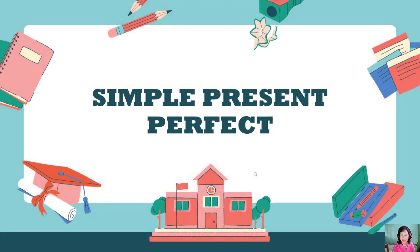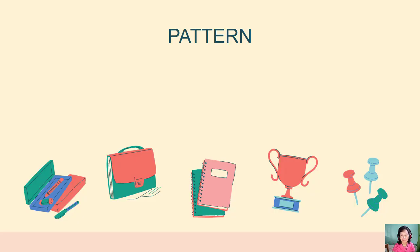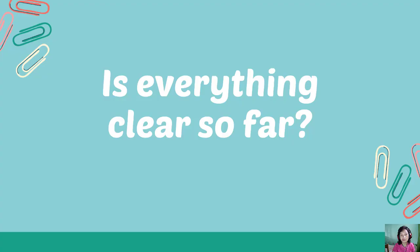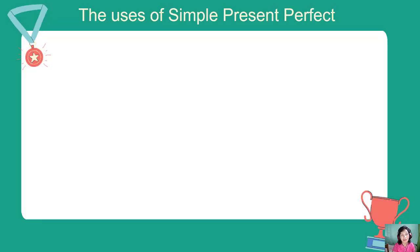Hi everyone, I hope you are in perfect condition because I want to tell you about the simple present perfect. It is one of the advanced tenses. Let's begin with the pattern: subject plus have or has plus verb three, or in past participle. We can use has if the subject is singular, and have if the subject is plural.